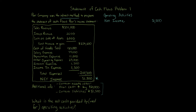Next, we're given additional information for current assets and current liabilities. Remember there's an inverse relationship for current assets — if they go up, that means cash goes down. Think about inventory: inventory is a current asset, and you acquire inventory with cash. We're told that current assets go up by $20,000, so that means we're going to be decreasing cash by $20,000, because you're buying inventory with cash.